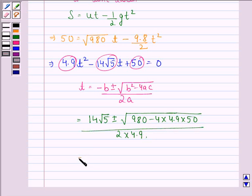This is equal to 14√5 divided by 2 × 4.9 because this is equal to 980 and this becomes 0.